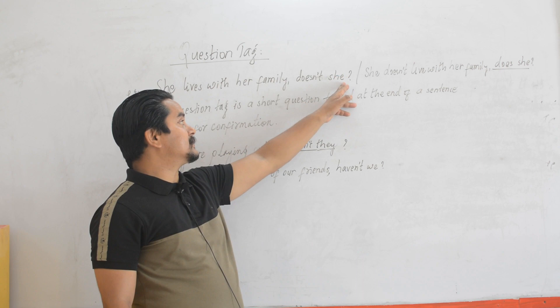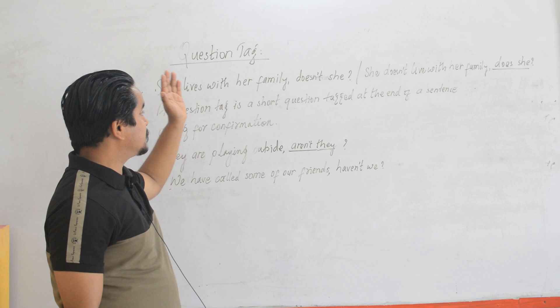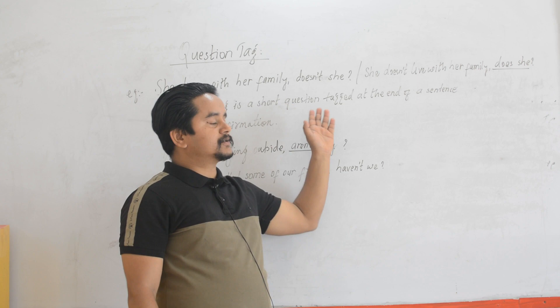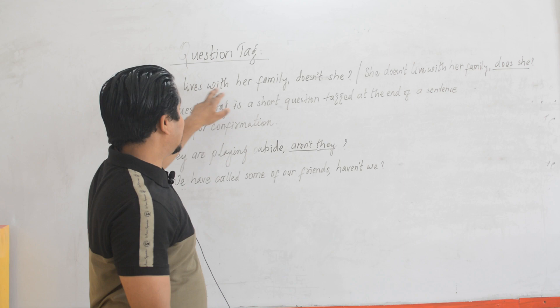You should know that in class 10, in the reproduction type of grammar, this question tag is asked for one mark. And even in the contextual passage also, it is asked for 0.5 marks, sometimes one mark also. So this we need to understand. The sentence and the question tag should be separated with a comma and it should end with the question mark.